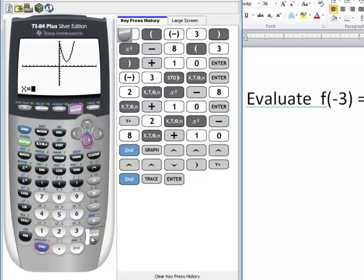It's asking what x value do you want to evaluate for? We want negative 3. Remember there's a difference between your minus and your negative. You press enter, it automatically evaluates for 52.